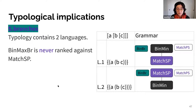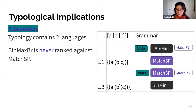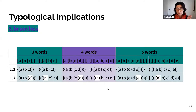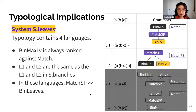I calculated the typologies using SPOT and OT Workplace. For the branch counting system, the typology contains just two languages. Bin-max-branches is never ranked against match-SP, and we only see a conflict between minimal binarity bin-min and match-SP. Language two is perfectly isomorphic since match is ranked on top. In language one, we match anything that's branching but don't match the non-branching XP. So there are non-branching phis in language two but not in language one, but otherwise they look the same.